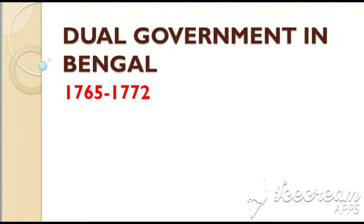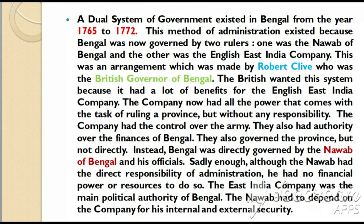Let's get started. A dual system of government existed in Bengal from the year 1765 to 1772. This method of administration existed because Bengal was now governed by two rulers — one was the Nawab of Bengal and the other was the English East India Company. This arrangement was made by Robert Clive, who was the British governor of Bengal.